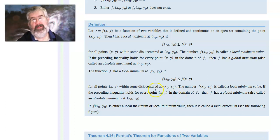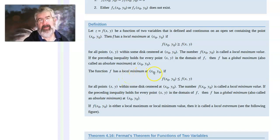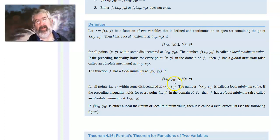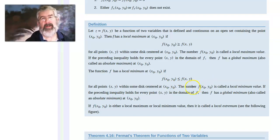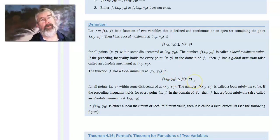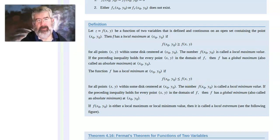Of course, with the idea of local and global maximums, there's also local and global minimums. F has a local minimum at X₀, Y₀ if F(X₀, Y₀) is less than or equal to F(X, Y) for all X, Y in some disk around X₀, Y₀. It's a global minimum if this inequality is true for all X, Y in the whole domain. Now, Fermat's Theorem — this is what we used back in Calc 1, but this is just a bigger version of it.